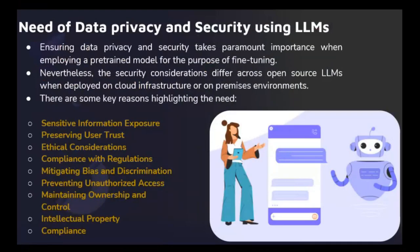Let's discuss why security and privacy are needed and what the justification is behind our expanded concern regarding data privacy and security. Imagine you are using a free pre-trained model and you need to fine-tune it. Ensuring privacy and security is like holding a safety protection while moving safely. There are several reasons to keep sensitive data safe: building trust, staying ethical, complying with regulations, removing biases, preventing unauthorized access, and maintaining control over data.